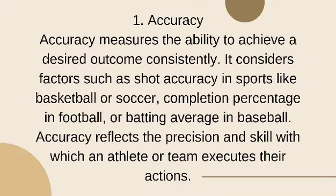1. Accuracy: Accuracy measures the ability to achieve a desired outcome consistently. It considers factors such as shot accuracy in sports like basketball or soccer, completion percentage in football, or batting average in baseball. Accuracy reflects the precision and skill with which an athlete or team executes their actions.